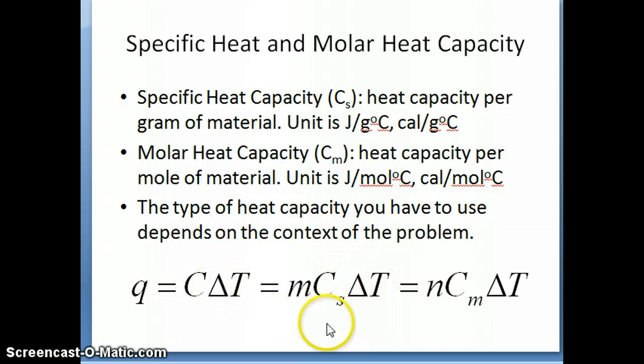So the equation, if you use specific heat, becomes M C sub S times delta T. If you use the molar heat capacity then it becomes N, which is the number of moles, times C sub M times delta T. Understand that these three equations are all really the same, they all calculate heat, but you use whichever equation depends on the context of the problem.